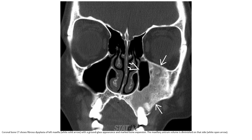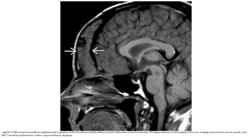Bone CT shows fibrous dysplasia of the mandible with a ground glass appearance and marked bone expansion. The maxillary antrum volume is diminished on that side. Gadolinium-enhanced MRI reveals frontal fibrous dysplasia with expansion of the frontal bone and obliteration of the frontal sinus. The signal intensity is intermediate in this case. Imaging characteristics are not specific, and non-contrast CT should be performed to confirm suspected fibrous dysplasia.